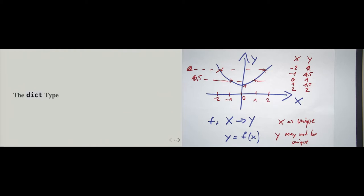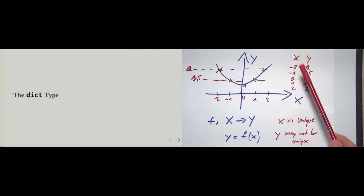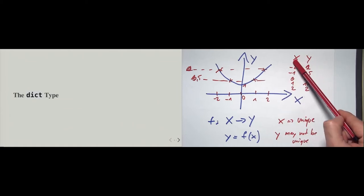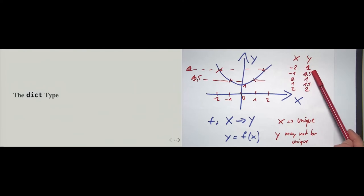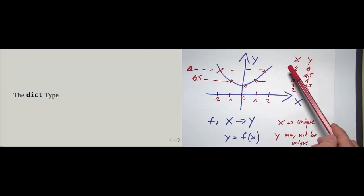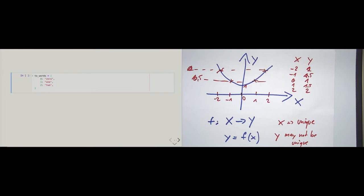As we can guess, a dictionary is something where we can look up something, and this is exactly what we will do. In a mapping, I look up the x's. When I look up an x, I read the corresponding y to the x — that's what look up means. So this is what we do with the dict type. Let's see how we can model a dictionary.